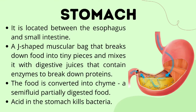The next stop is the stomach, located between the esophagus and small intestine. It is a J-shaped muscular bag that breaks down food into tiny pieces and mixes it with digestive juices containing enzymes to break down proteins. The bolus mixes with different digestive juices that help break down proteins. These digestive juices contain enzymes that facilitate the digestion and breakdown of food into substances needed by the body.